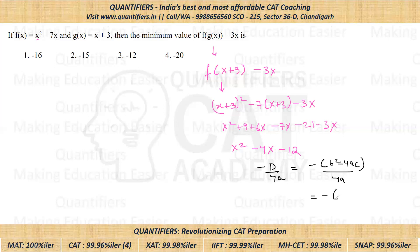So let's put the values now. Minus of B square, B square here would be minus 4 square, so that is 16 minus 4 times 1 into minus 12. So that would be plus 4 into 12, so that would become 48 divided by 4 times 1, so that would be 4.